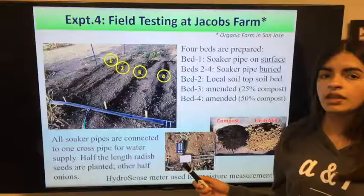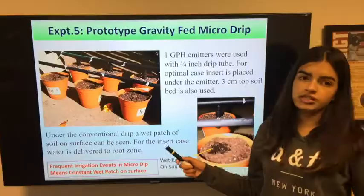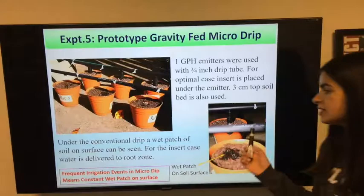Experiment 4 was the field testing at Jacob's Farm. Beds 3 and 4 were amended with compost. Experiment 5 was the prototype gravity fed method. This is the optimized with the emitter and the insert and the water going straight down to the root zone, while this is the conventional drip.